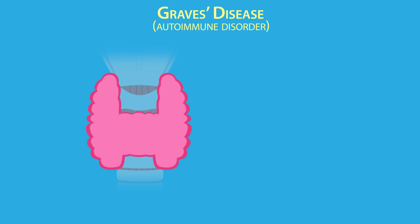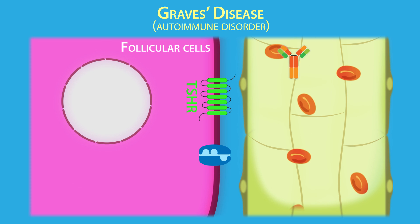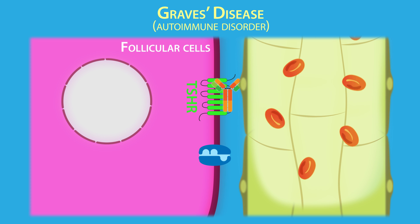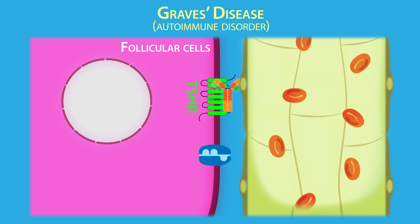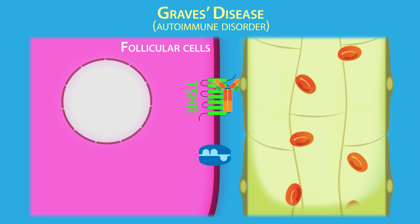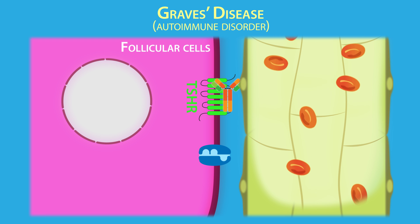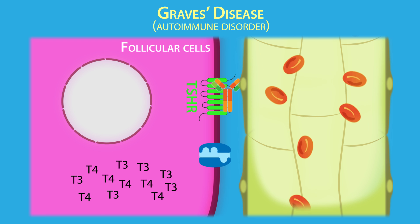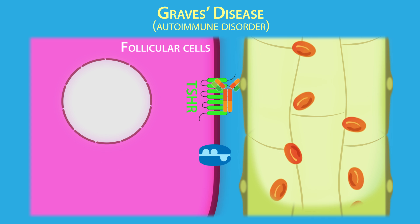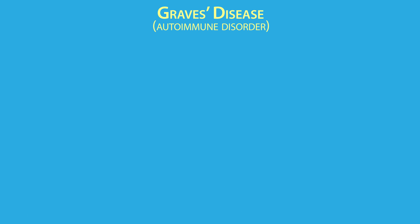Graves' disease is an autoimmune disorder and hyperthyroidism is its most common feature. It is caused by antibodies against the thyroid stimulating hormone receptor, which bind the receptor and lead to the constitutive synthesis and release of T3 and T4.